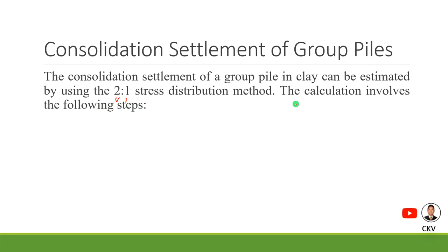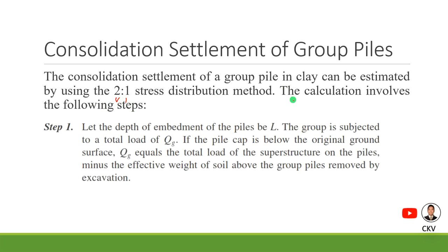Here are the step-by-step processes in determining the consolidation settlement of group piles. Step 1: let the depth of embedment of the piles be L. The group is subjected to a total load Q, and if the pile cap is below the original ground surface, Q equals the total load of the superstructure on the piles minus the effective weight of the soil above the group piles removed by excavation.